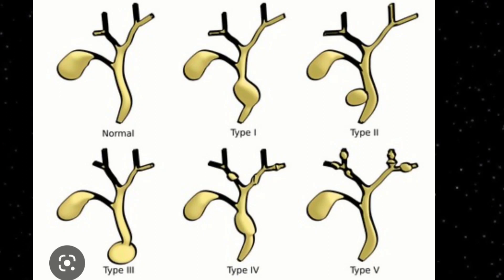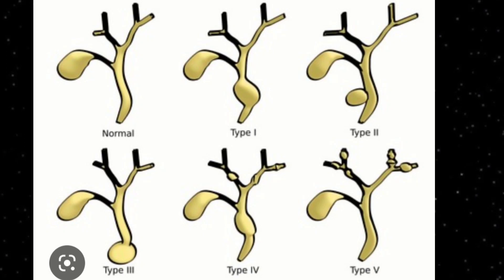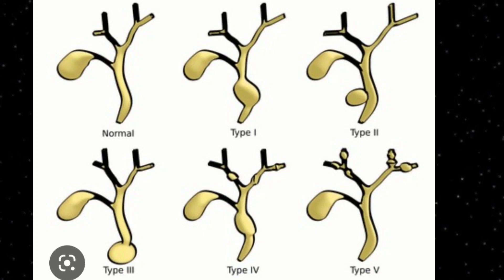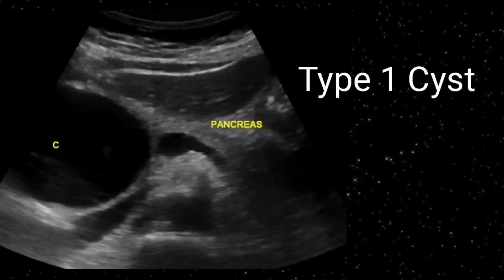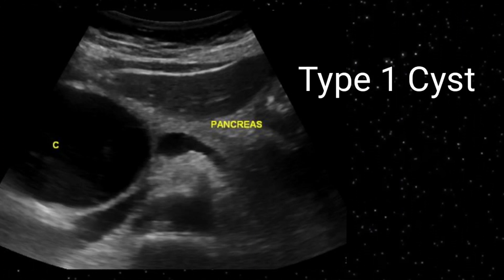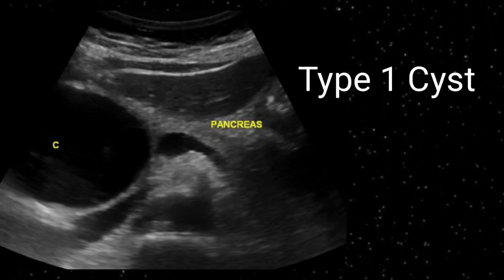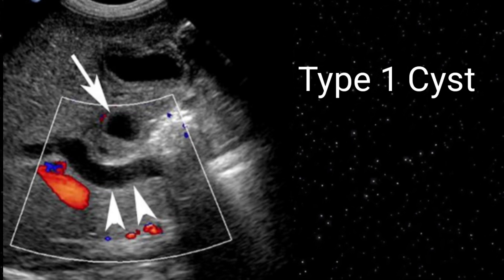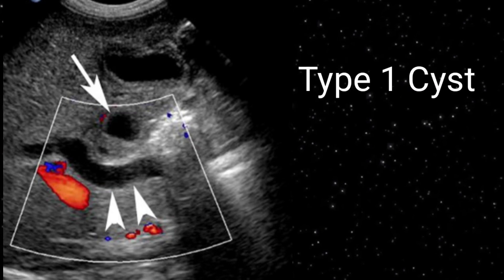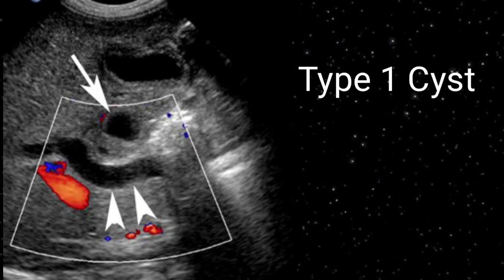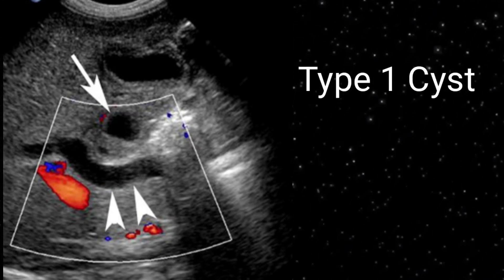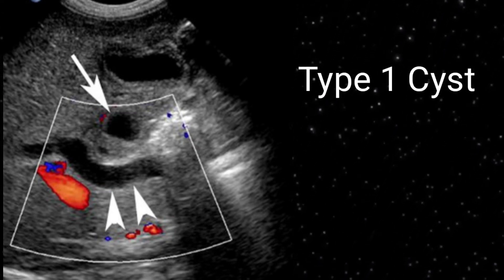Type 4 shows multiple intrahepatic and extrahepatic biliary dilatation. Type 5 is also called Caroli disease and consists of multiple intrahepatic biliary dilatations. On ultrasound images, choledochal cyst Type 1 will appear as a big simple cyst in the proximity of the CBD with a clear margin — a fusiform dilatation of the CBD. You can appreciate the CBD, and with color flow you can see the artery; above it you can see a clear small cyst, which is a Type 1 choledochal cyst. It may appear small or large in size — whatever you find, mention it on the report.